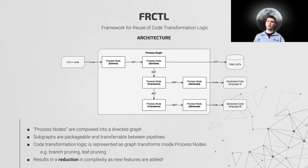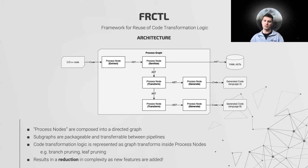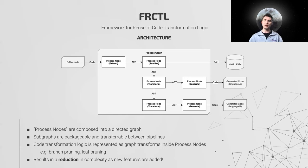The pipeline splits after the first transformation node, resulting in two pipelines that share common logic that only has to run once. Similarly to the process graph, all data operations are treated as graph transforms applied to a syntax tree, such as branch and leaf printing. To maximize logic reuse, process nodes can be combined into multi-stage subgraphs that are packageable and transferable between different pipelines. So in this example, those first three stages in the graph can be packaged up and passed between pipelines.